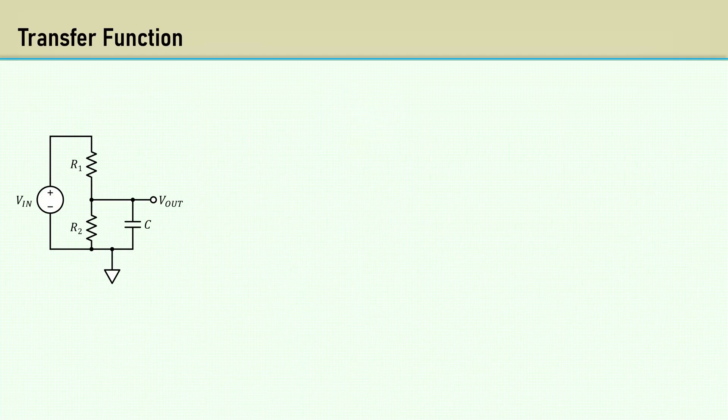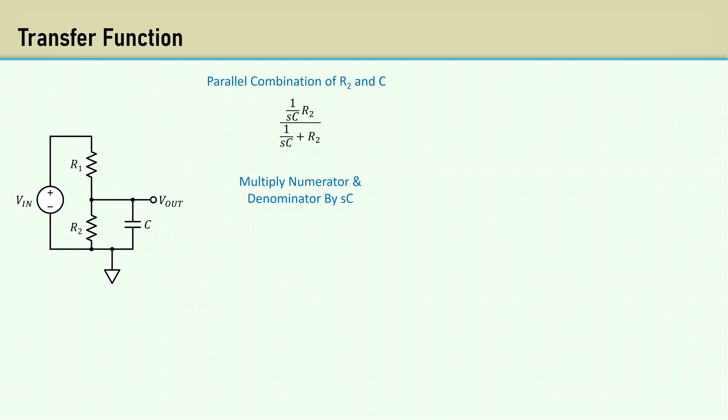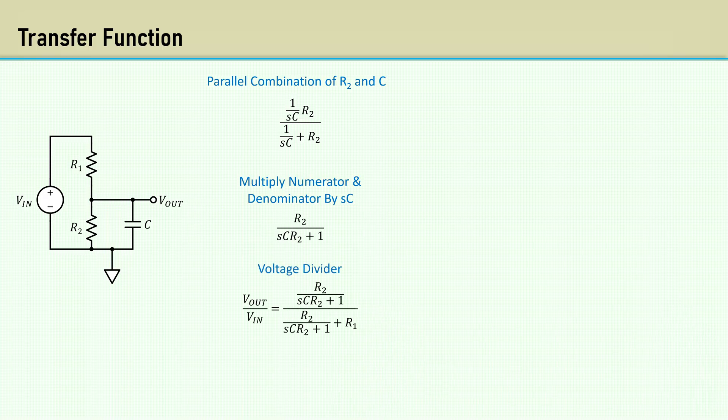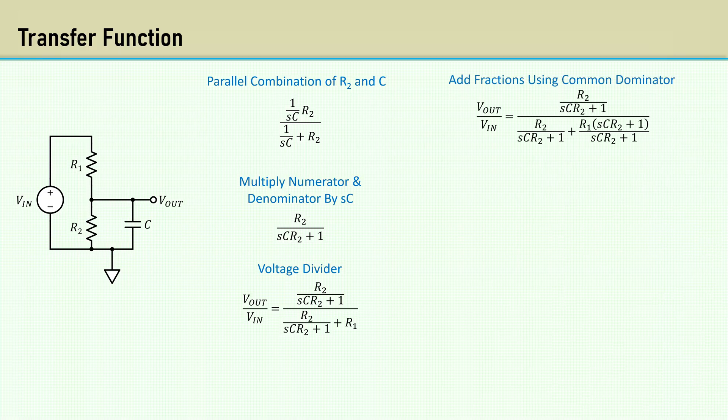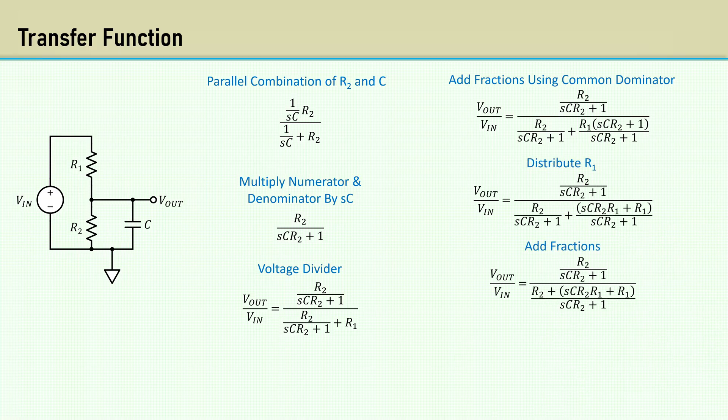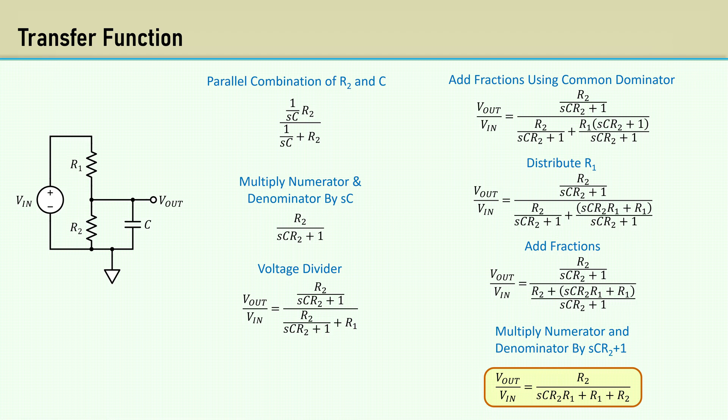I'll now derive a transfer function for the circuit. Here's the parallel combination of C and R2. Simplify by multiplying the numerator and denominator by SC. Then place that into the voltage divider equation. Add the fractions in the denominator using a common denominator. Distribute R1 and add the fractions. Finally, multiply the numerator and denominator by SCR2 plus 1 to simplify.